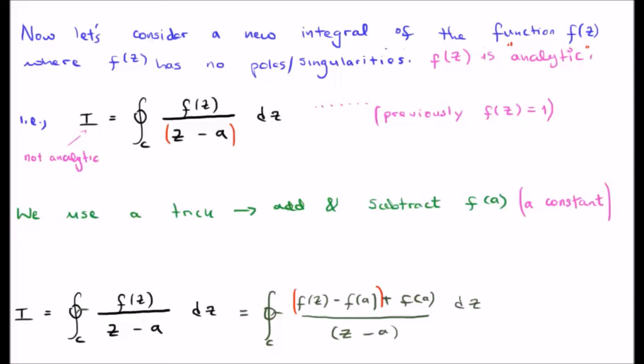Remember, something is analytic where it can be described by a power series expansion or where it is differentiable at that point. So my nomenclature will be that small f of z is an analytic function. Capital F of z is not an analytic function.